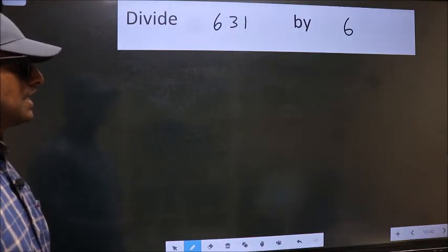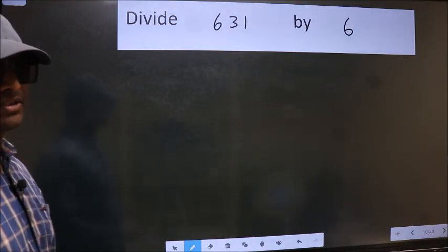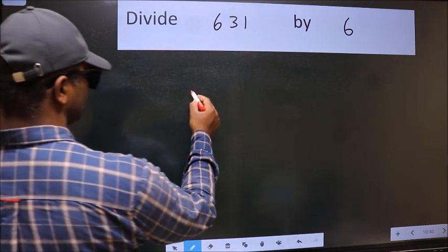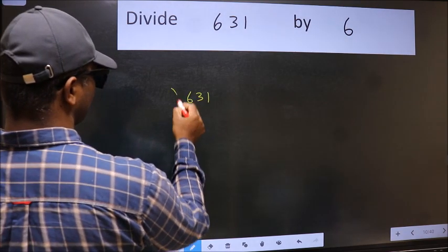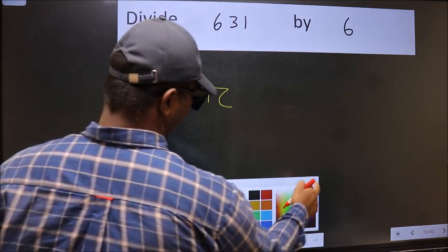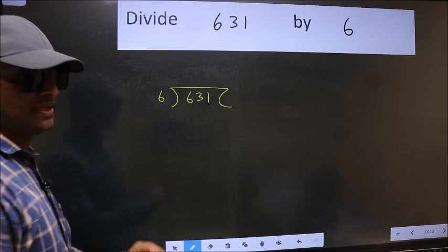Divide 631 by 6. To do this division, we should frame it in this way: 631 here and 6 here. This is your step 1.